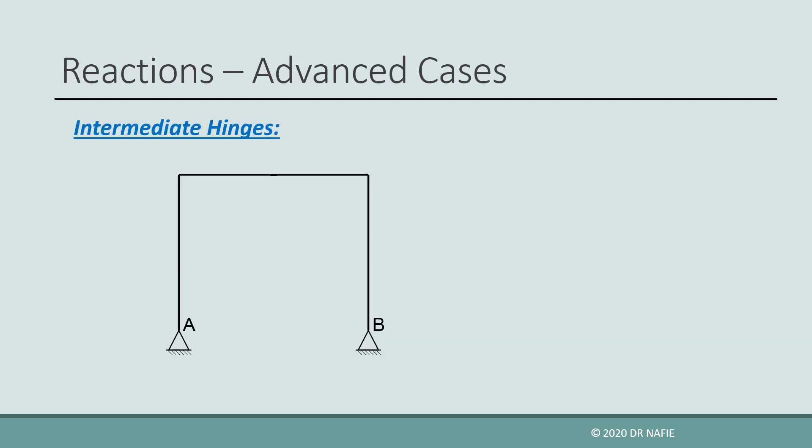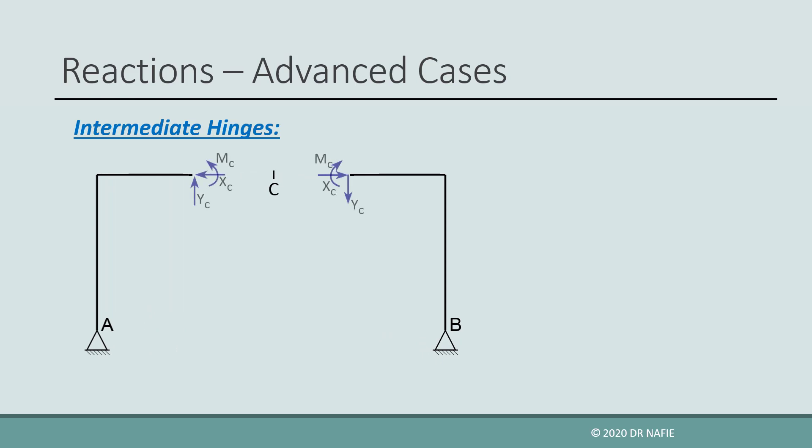Let us first discuss the intermediate hinge. In the previous lecture about internal forces, we explained that if any loaded 2D structure is cut at a point, two internal forces and one internal moment will appear at that point on each side of the cut. We also explained that the presence of the internal forces is caused by the transfer of load effects from one point to another until it reaches the supports.